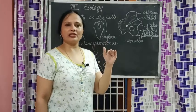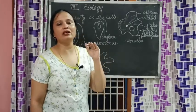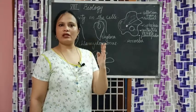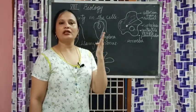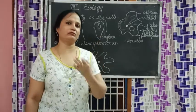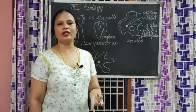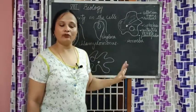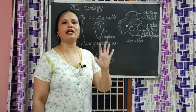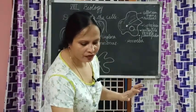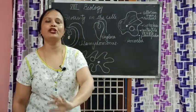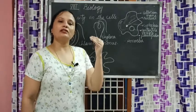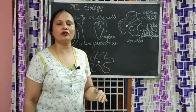Before we finish, let us recap. How many scientists did we learn about? We learned about Athanasius Kircher, Ian Swammerdam, Anthony van Leeuwenhoek, Robert Hooke, and Robert Brown - five scientists. We also learned five activities which explain that all living organisms have cells and all living organisms have a nucleus. We also learned about the diversity in cells. Tomorrow we will learn about cells in the leaf. Thank you children.